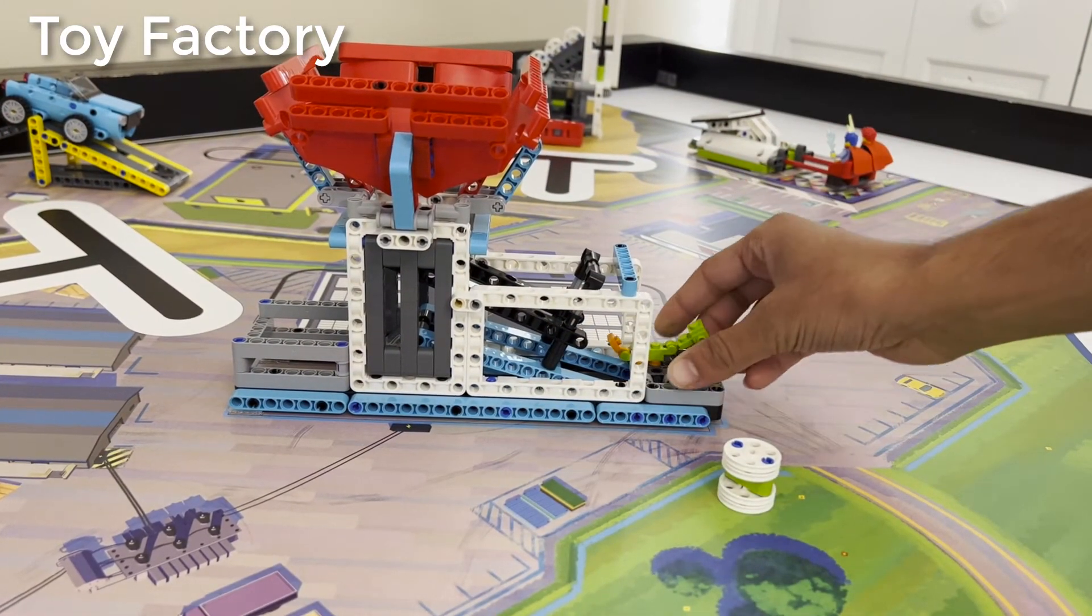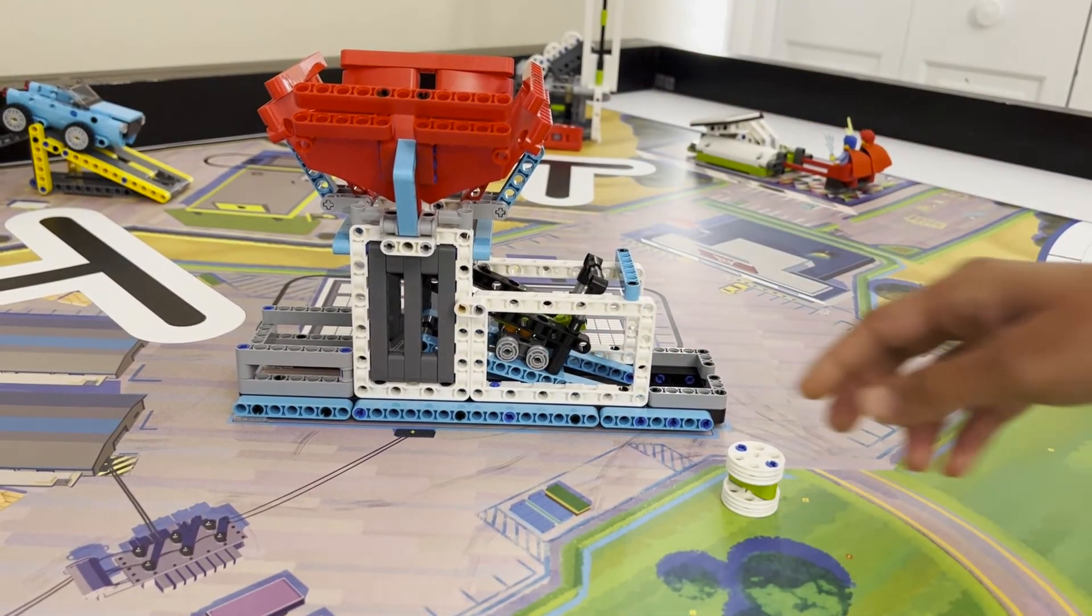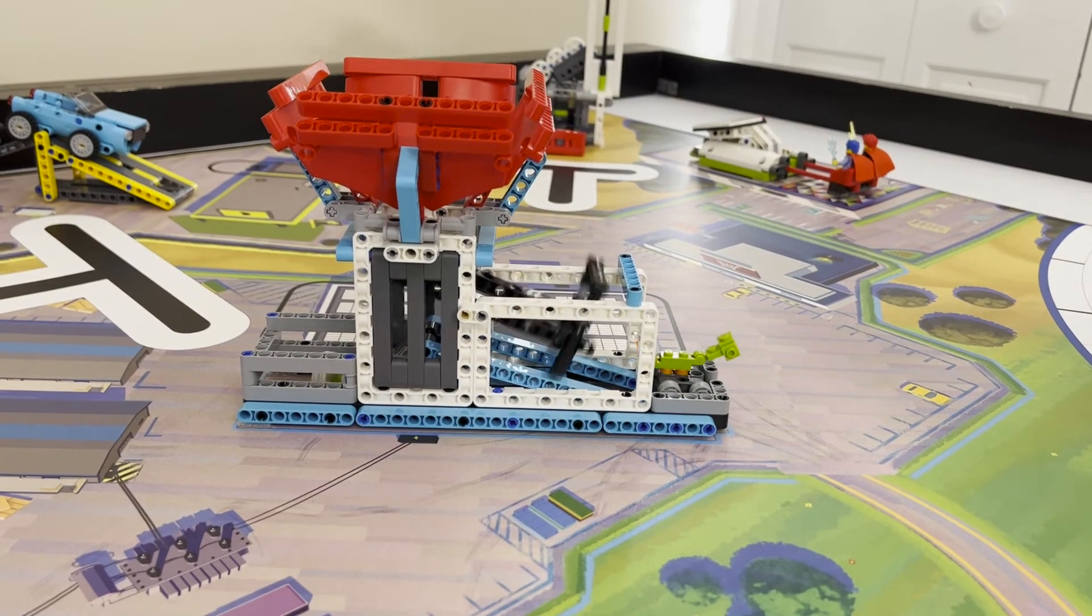Load the mini dinosaur toy under the black arm at the center of the model. Insert an energy unit into the funnel on top to release the toy.